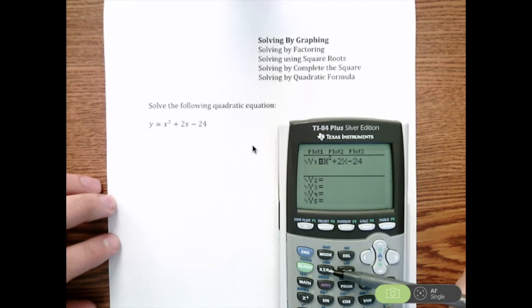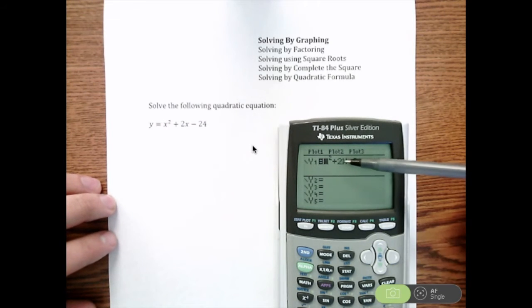If you need to know how to type in x, it's this button right here. We'll type in x. So we have x squared plus 2x minus 24.